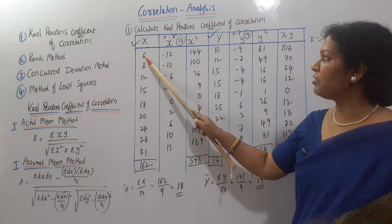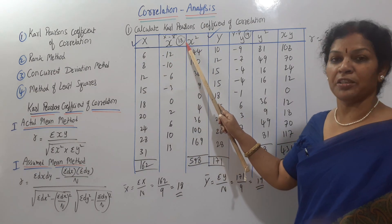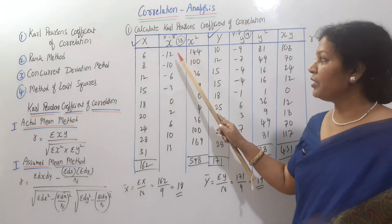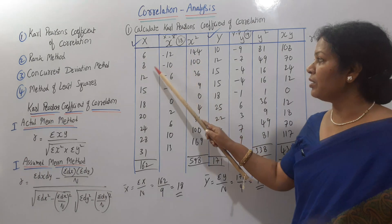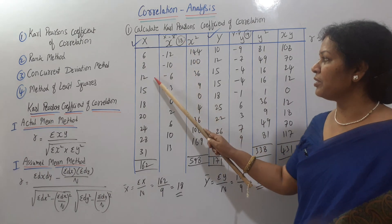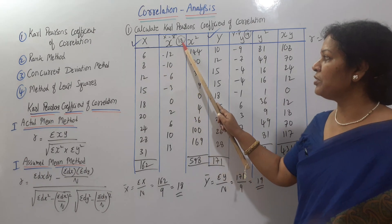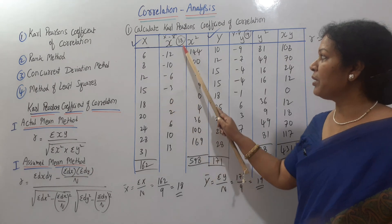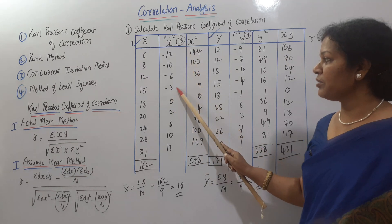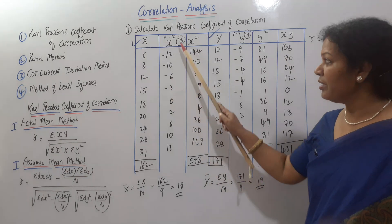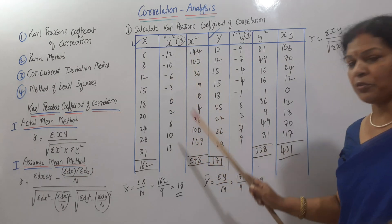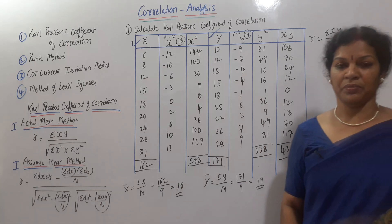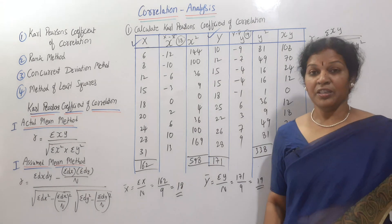Now we compute small x, which is x minus x-bar, where x-bar is 18. For example: 6 minus 18 is minus 12; 8 minus 18 is minus 10; 12 minus 18 is minus 6; 15 minus 18 is minus 3.